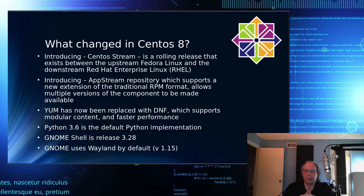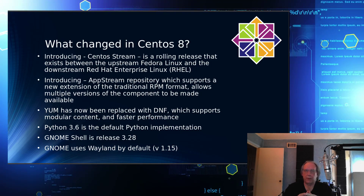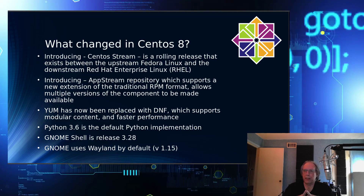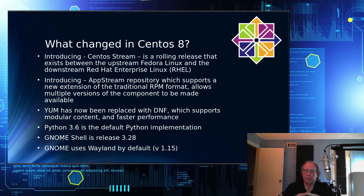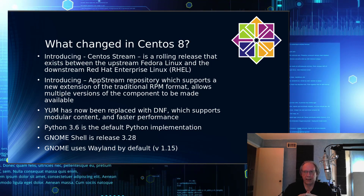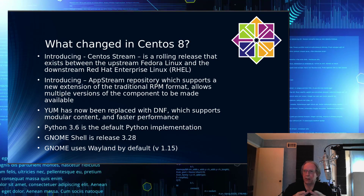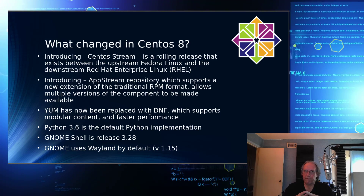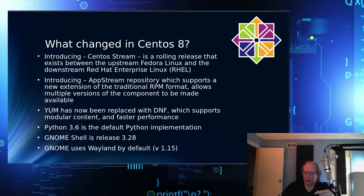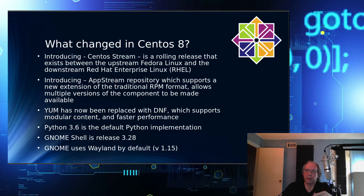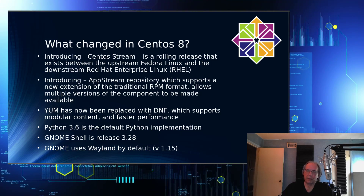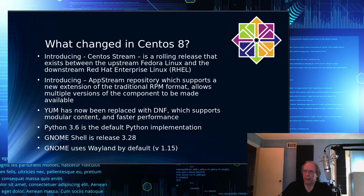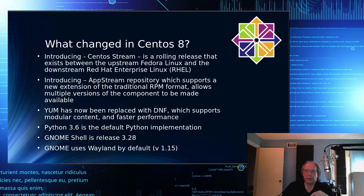Python 3.6 is the default; Python 2.7 is not installed by default. The GNOME shell is version 3.28, and GNOME uses Wayland — version 1.15 — by default. Xorg is available if you want to install it, but out of the box GNOME will support Wayland.